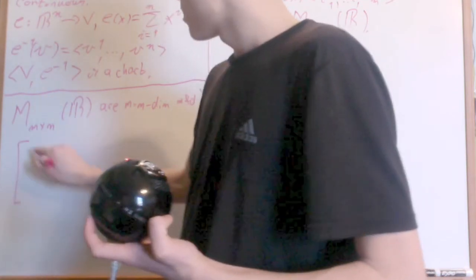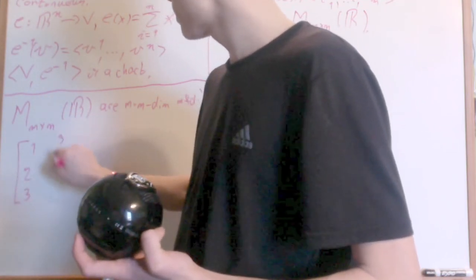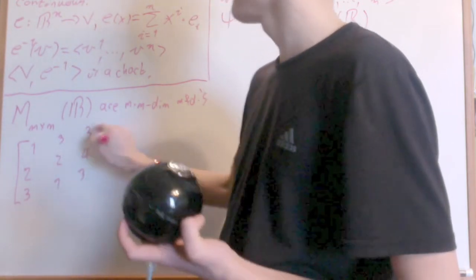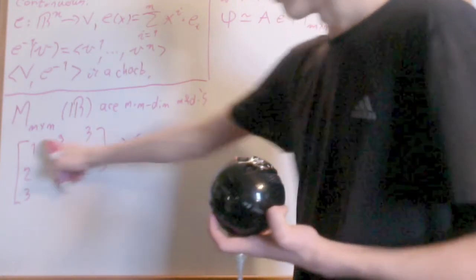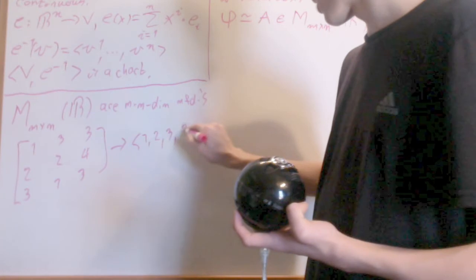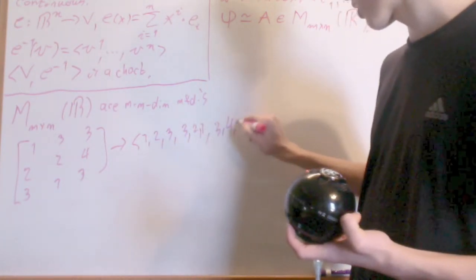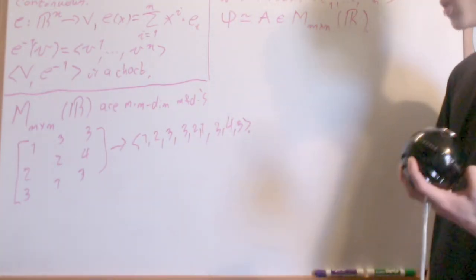The reason is because if I have a matrix like 1, 2, 3, 3, 2, 1, 3, 4, 3, I could just represent this as a tuple 1, 2, 3, 3, 2, 1, 3, 4, 3, and that's just a nice homeomorphism.